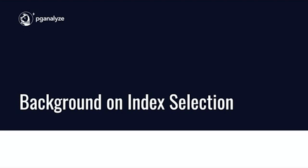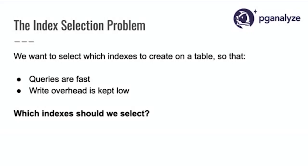The index selection problem is about wanting to select a certain set of indexes to create on a table whilst making sure they make queries fast — that's why we want indexes in the first place — and keeping write overhead low. We don't just want to index everything most of the time because that adds a lot of overhead. That's the challenge: these two opposing goals. The question is which indexes should we select. When we say selection, we don't mean a new index method — we're just talking about regular B-tree indexes. It's just a question of which CREATE INDEX command to run.